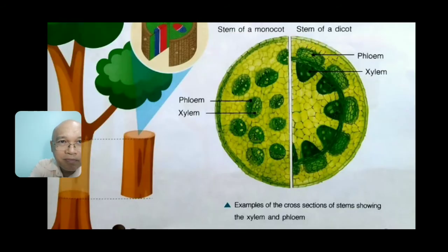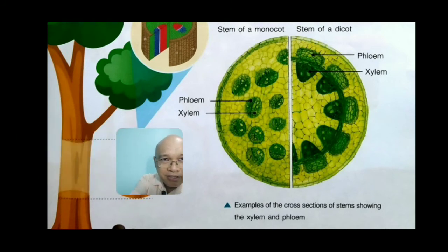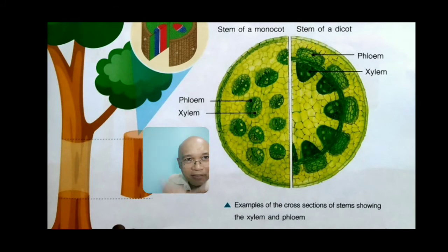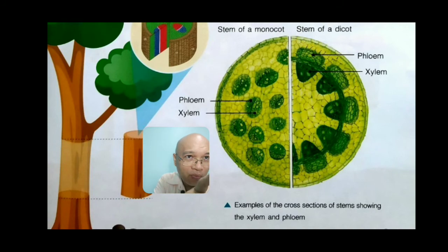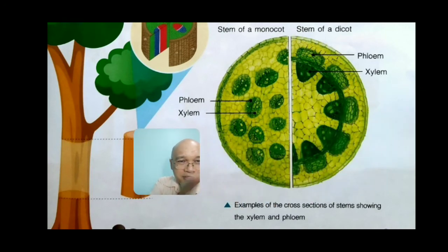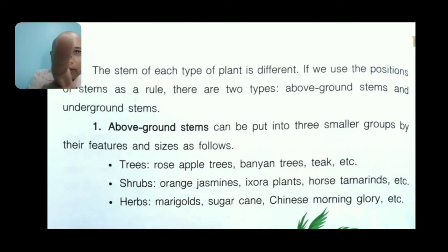Let's look at the stem of a monocot — the xylem and phloem are arranged in a scattered pattern. Now, the stem of a dicot is different. By looking at the shape or arrangement of the xylem and phloem, you can tell whether a plant is a dicot or a monocot. These are cross-sections of stems showing the xylem and phloem arrangements.